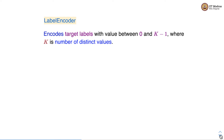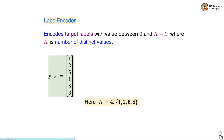Label encoder encodes the target variable or target label with values between 0 and k-1, where k is the number of distinct values. Imagine we have a label vector y with six samples. The values in the label vector are 1, 2, 6, 1, 8 and 6. Here the unique values are four: 1, 2, 6 and 8, and hence k is equal to 4.